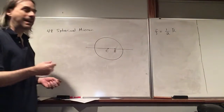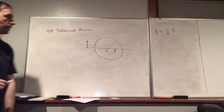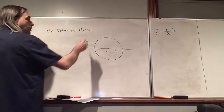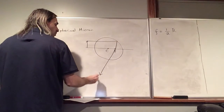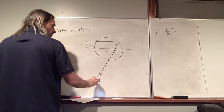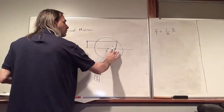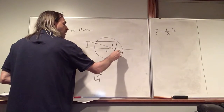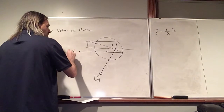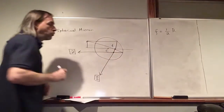Let's draw our mirror. Here's our center, and we know the focal point is right in the middle. Now what we're going to do is consider a concave mirror and represent our object as an arrow. We want to know what kind of image we're going to get. We know if we draw a ray parallel to the principal axis, when it reflects it's going to go through the focal point. Let's call this ray one. We know that anything parallel to the principal axis reflects to the focal point.